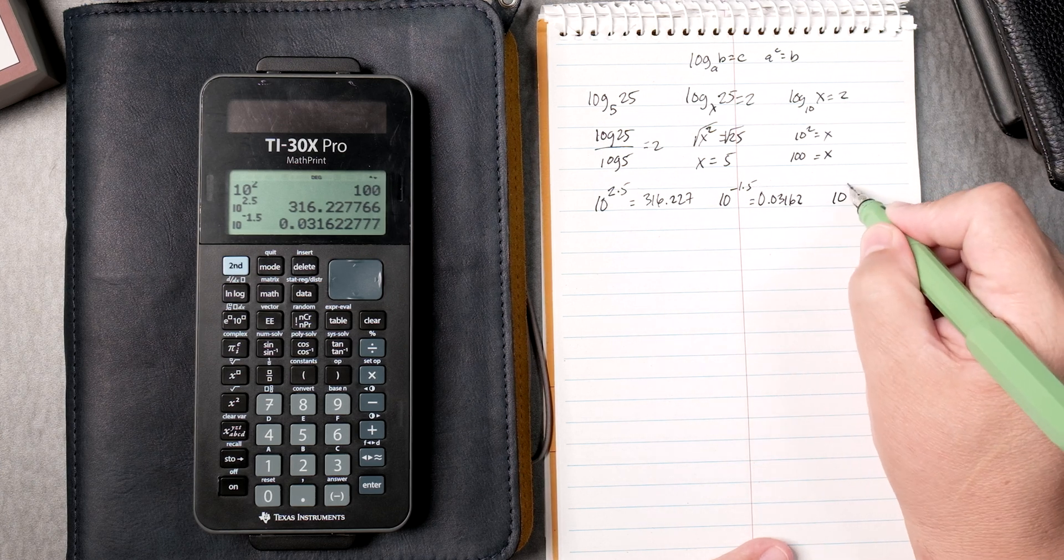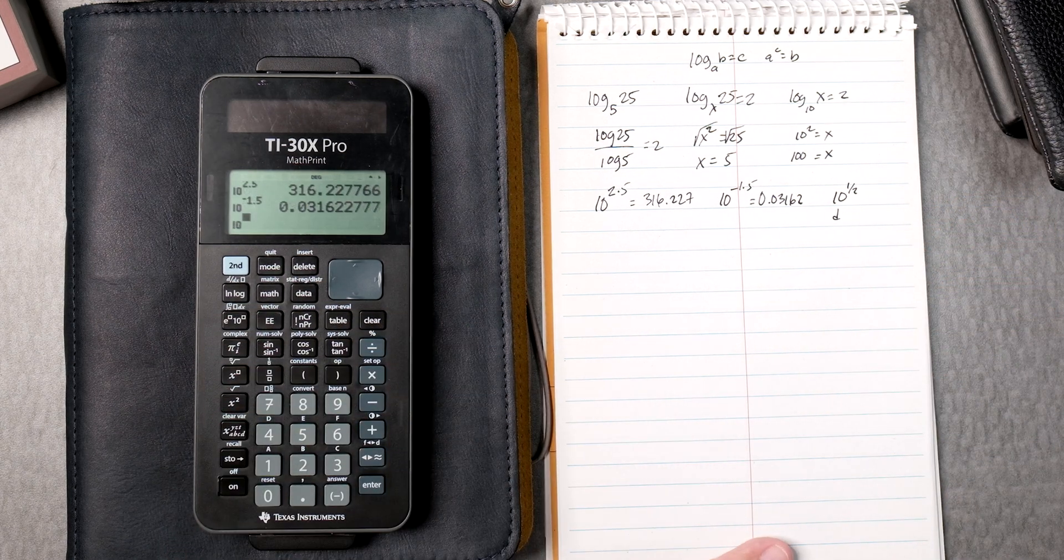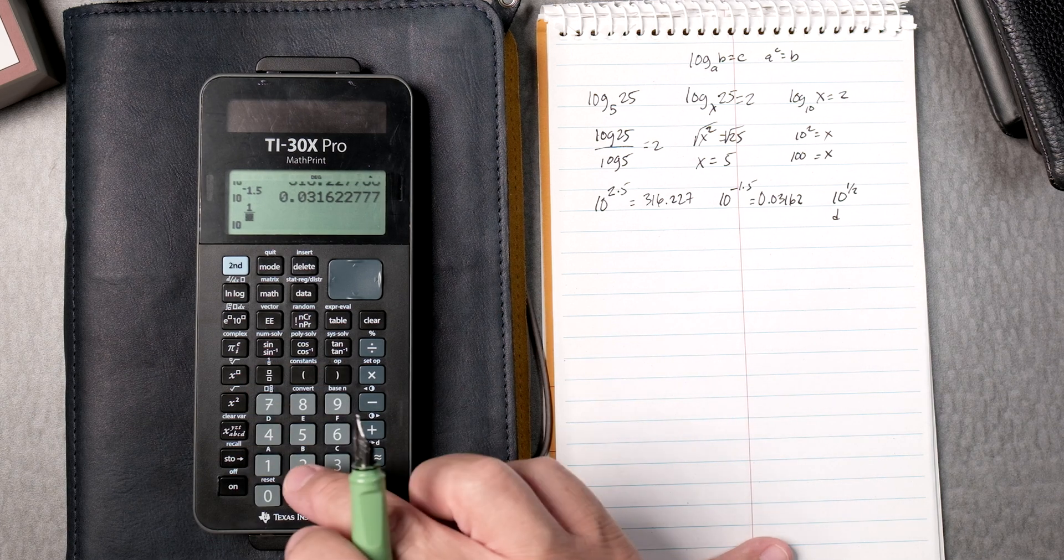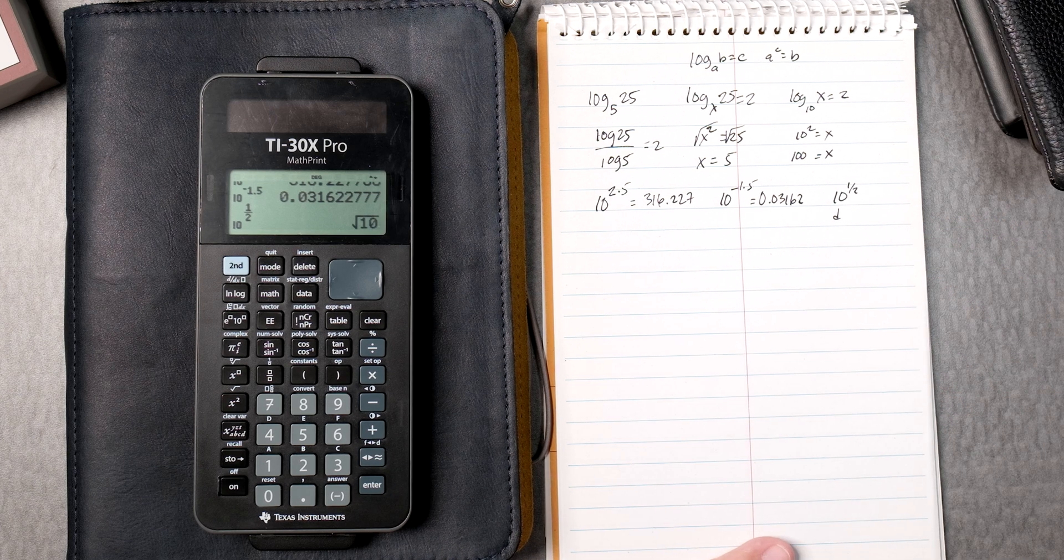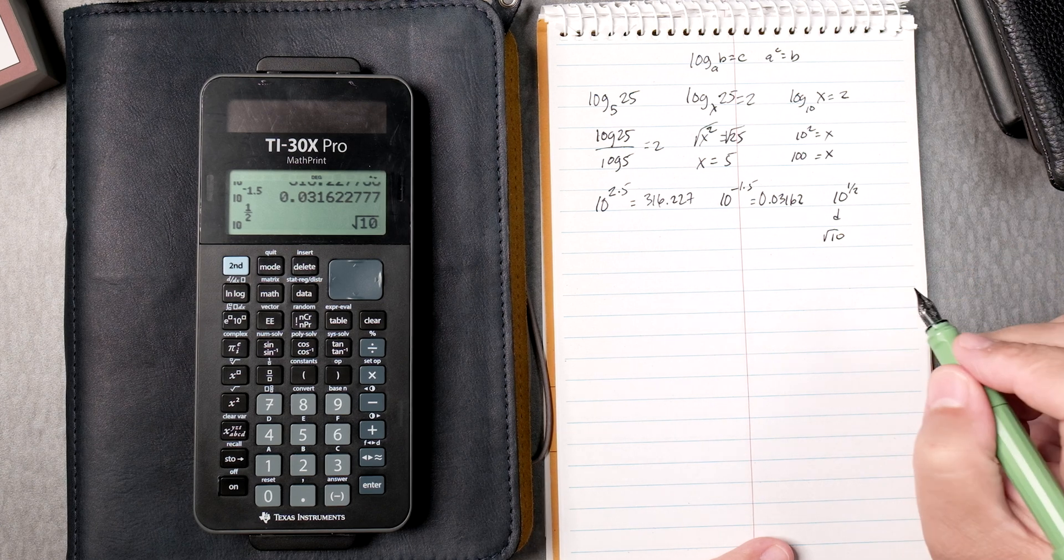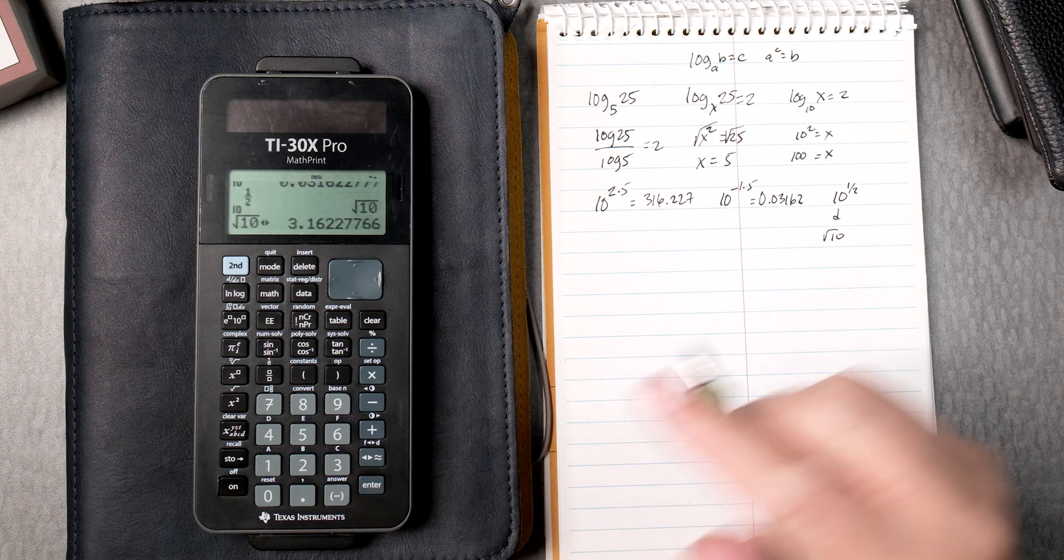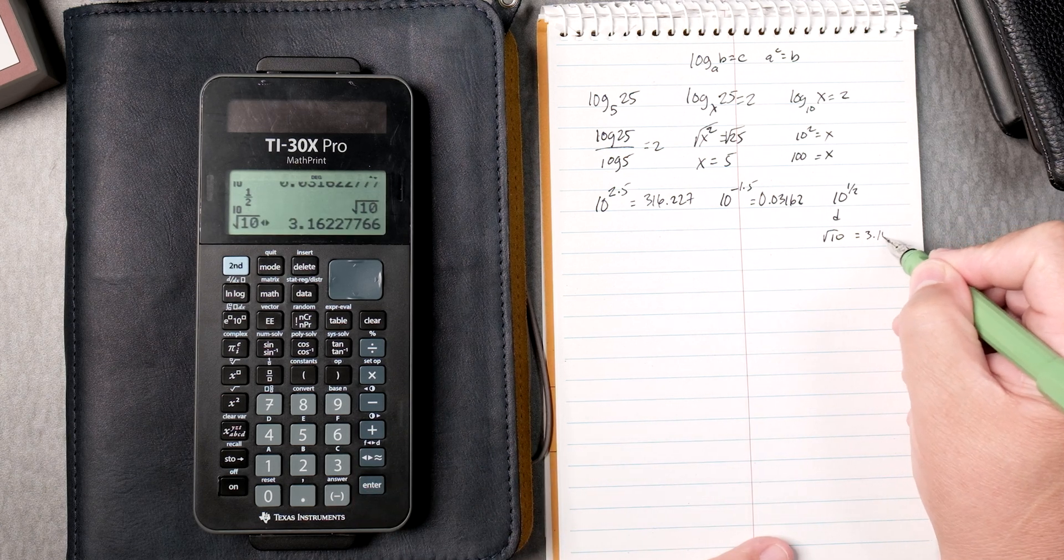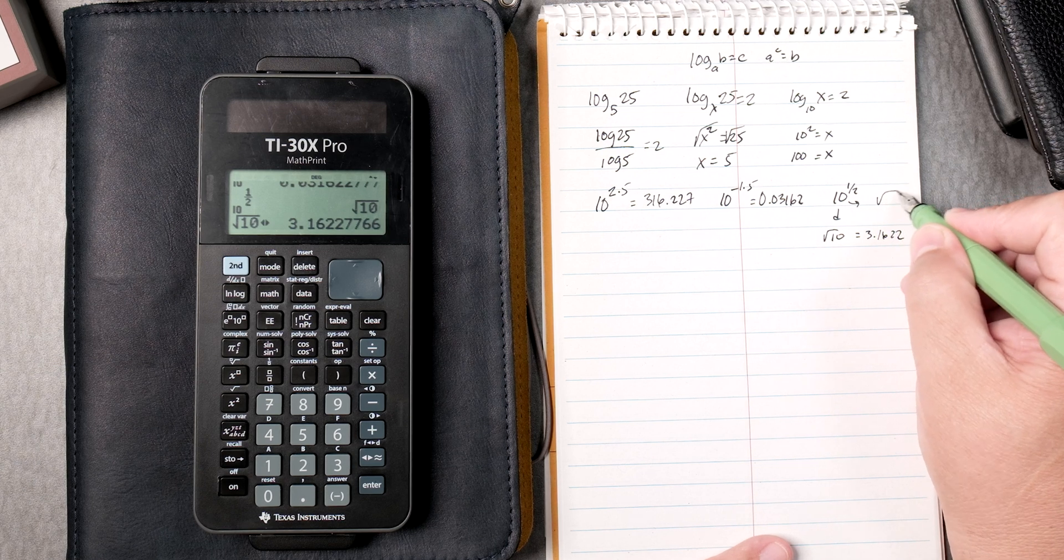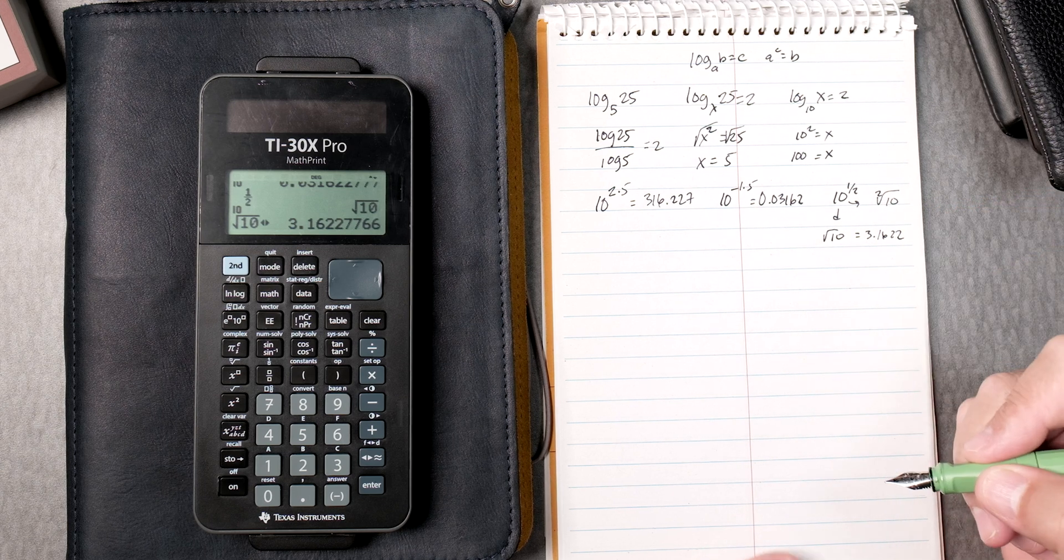Then 10 to the half power. So again, you can press this twice. Let's see if this works. You can put 1, the fraction button, 2, enter. And it gives you, in this case, the square root of 10, which is correct by the way. And then we can press the approximation button, and it gives you 3.1622.